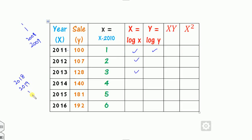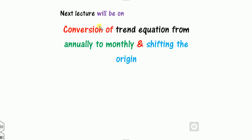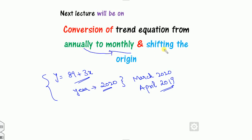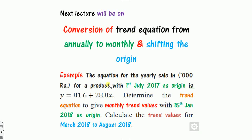I hope you can enjoy this session and are able to solve this non-linear trend in the easiest manner. In the next lecture we will consider the trend equation conversion for monthly data. So far we have found trend values annually and forecasted for a complete year like 2020. But what if we want to find the forecasted value for March 2020, or for the 12th month, or a specific date? That is covered in the next lecture: conversion of trend equations from annual to monthly, and shifting the origin.